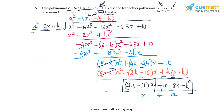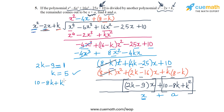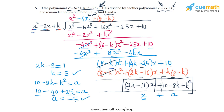Matching the coefficients: 2k minus 9 equals 1, the coefficient of x in the given remainder. This gives 2k equals 10, so k equals 5. Matching the constant terms: 10 minus 8k plus k squared equals a. Substituting k equals 5: 10 minus 40 plus 25 equals a, so a equals minus 5.